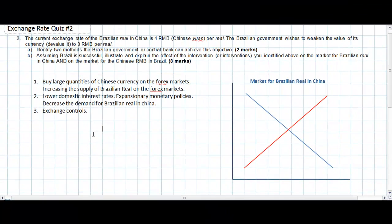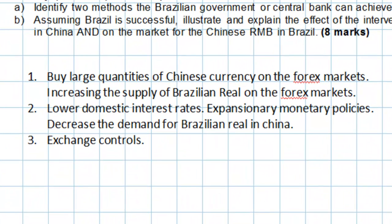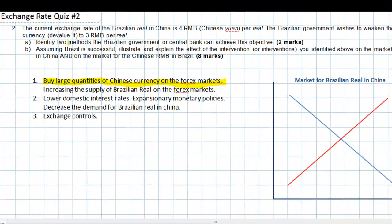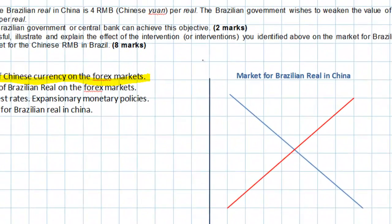Part B says: assuming Brazil is successful, illustrate and explain the effect of the intervention that you identified above on the market for Brazilian real. Let's look at our graph and see what would happen if the Brazilian central bank were to buy large quantities of Chinese currency on the forex market using its own currency. First, we need to label our graph for Brazilian real in China.